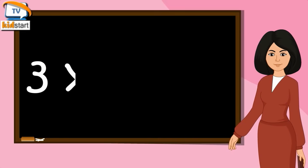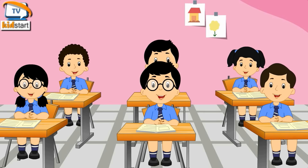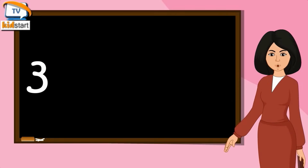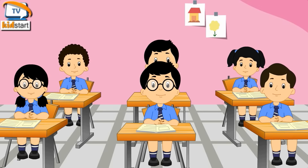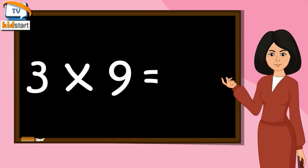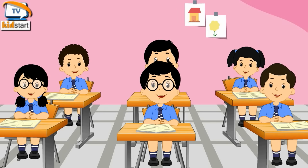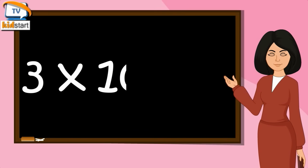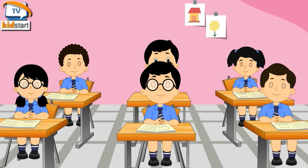3 times 6 is 18. 3 times 7 is 21. 3 times 8 is 24. 3 times 9 is 27. 3 times 10 is 30.